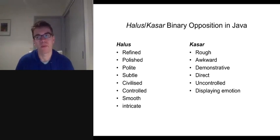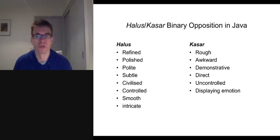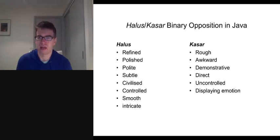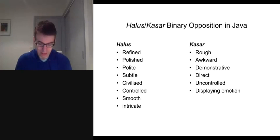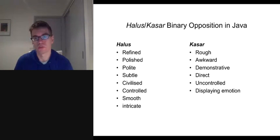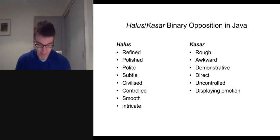In contrast, people who are very emotive, brash, outlandish, who run their minds off, are seen as being Kasar, and Kasar is seen as a weakness in Javanese society because an individual seems to have a lack of control. The emotions associated with Alus and Kasar are also very important to the performing arts, and we'll be talking about them later on in this presentation.